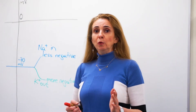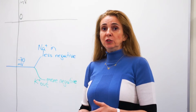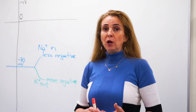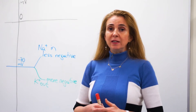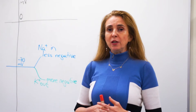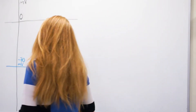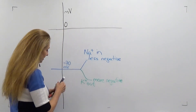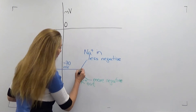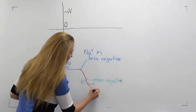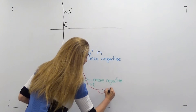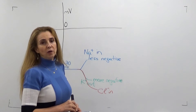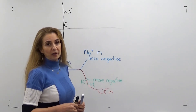We have learned that movement of sodium into the cell causes depolarization, and movement of potassium out of the cell causes hyperpolarization — these are different types of local potentials. What about chloride? In most cases chloride moves into the cell, and when chloride moves into the cell it makes the cell membrane more negative, or in other words it hyperpolarizes it.